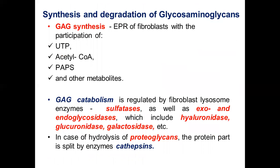Glycosaminoglycan synthesis occurs in the endoplasmic reticulum of fibroblasts with the participation of UTP, acetyl-CoA, phosphoadenosyl phosphosulfate, and other metabolites. Catabolism of glycosaminoglycans is regulated by fibroblast lysosomal enzymes including sulfatases, exo- and endoglycosidases, etc. In the case of hydrolysis of proteoglycans, the protein part is split by the enzyme cathepsin.